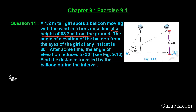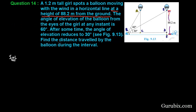Let us set up the diagram. Suppose point A and point B are positions of the balloon, point C and point D are on the ground, and point E and point F are also marked. First we shall find the distance ED.